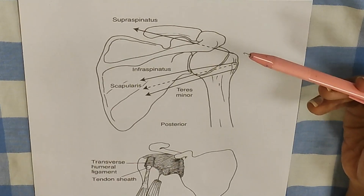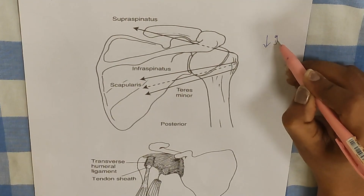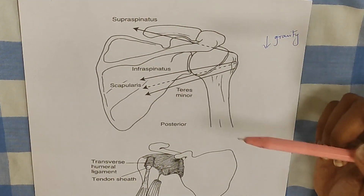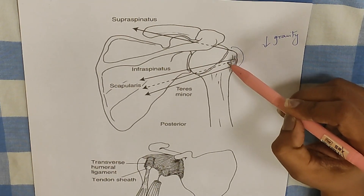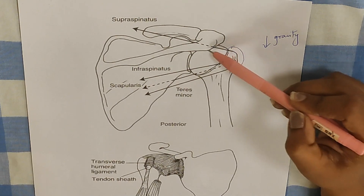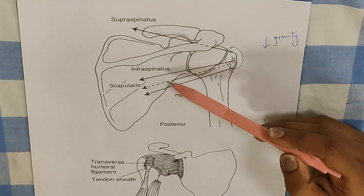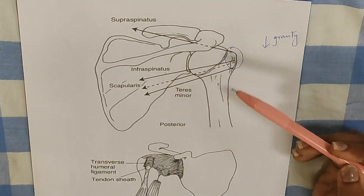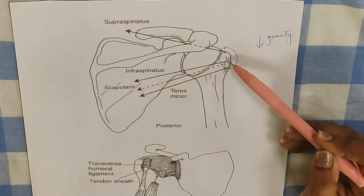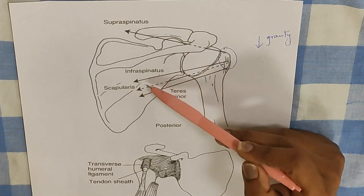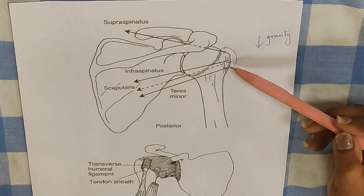In order to offset this large superior directed force caused by the deltoid, we require a force supplied in the inferior direction. We already have gravity acting inferiorly, but gravity alone is not enough because when deltoid causes abduction it overcomes gravity. The additional inferior force is supplied by the cuff muscles. Most of the cuff muscles insert to the greater tubercle. The supraspinatus action line travels superiorly and medially, while the infraspinatus, subscapularis, and teres minor are directed inferiorly and medially. The subscapularis is anterior; teres minor and infraspinatus are part of the posterior cuff.